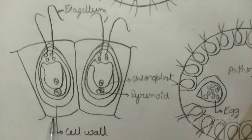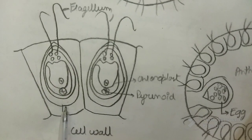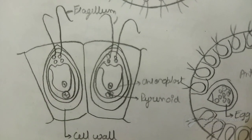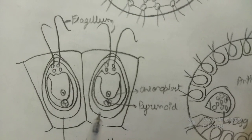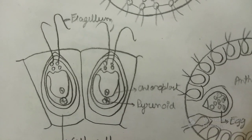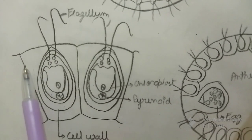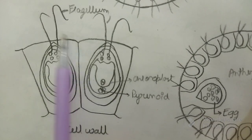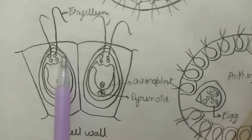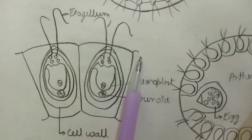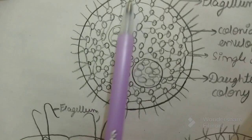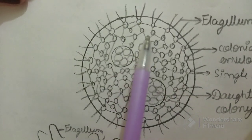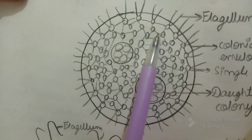As you can see, there is a cell wall, there is a cup-shaped chloroplast — just like your Chlamydomonas — and pyrenoid is also present. Now they are all covered in a mucilaginous sheet, and they are interconnected with each other with these interconnections.